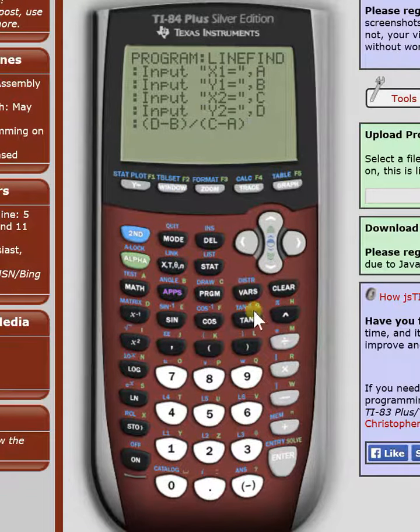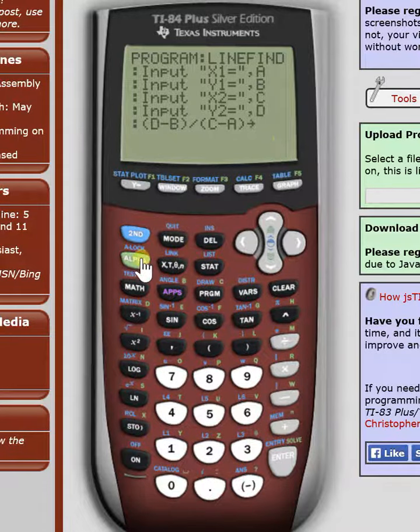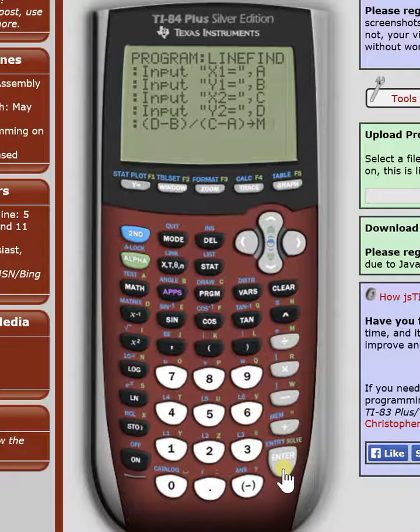So just like last time, we're going to store it. Hit the store button into a different variable. Call it m. Because in our standard linear equation, our slope is always m. So now we're going to hit enter again.